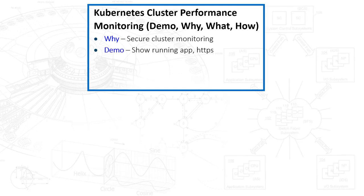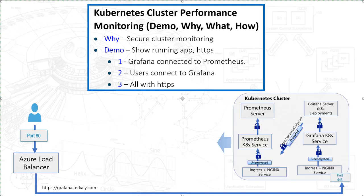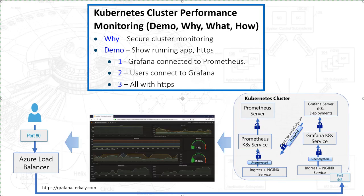The demo is going to show us connecting up to Grafana. Grafana connects up to Prometheus. All of this is done with HTTPS. The user is going to come in on grafana.turkly.com using HTTPS, connecting up to the Kubernetes cluster, which will forward the current performance statistics back to the user.